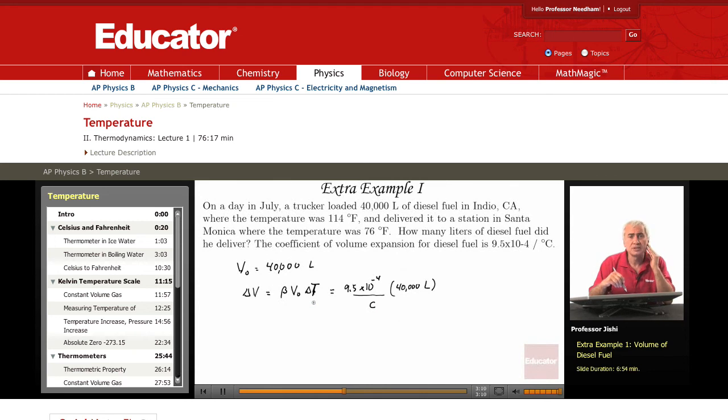However, we're given the temperatures in Fahrenheit. The change in temperature between Indio and Santa Monica, that's from 114 to 76. So delta T is 76 Fahrenheit minus 114 Fahrenheit, and that's minus 38 degrees Fahrenheit.